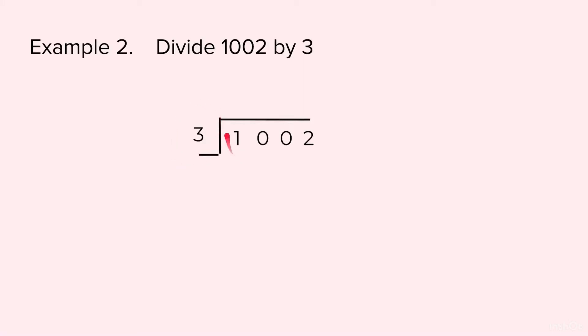Now when we see the first digit is less than the divisor, so we will take the first two digits, that is 10. Now we will see how many times does 3 go in 10. 3 threes are 9, so we will write 3 on top, 9 at the bottom. Subtract — we are left with 1.